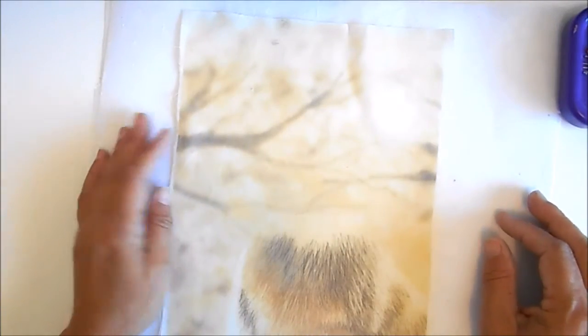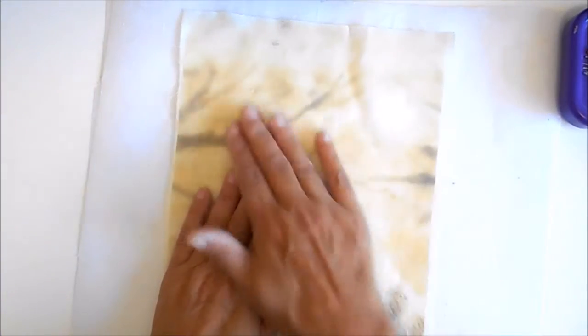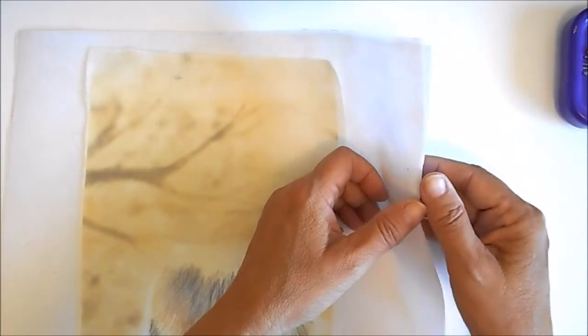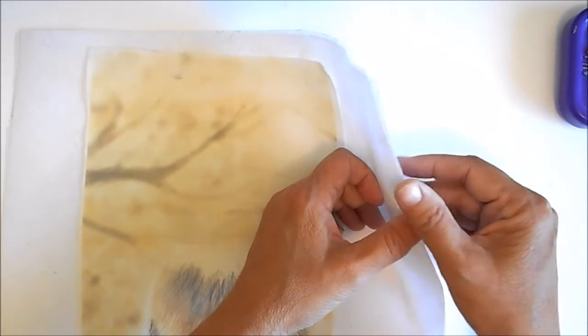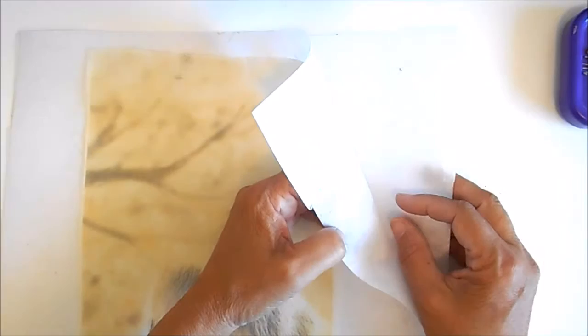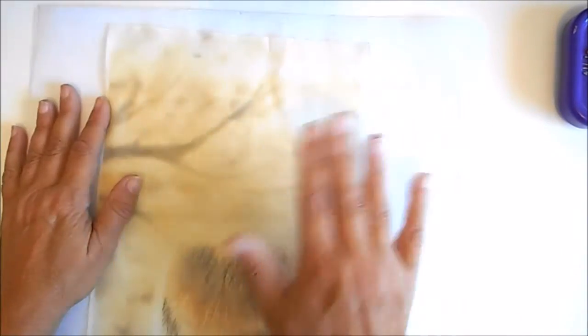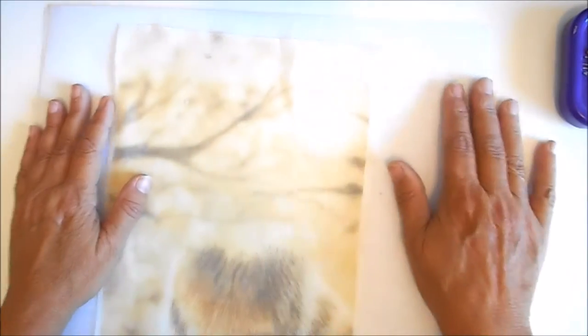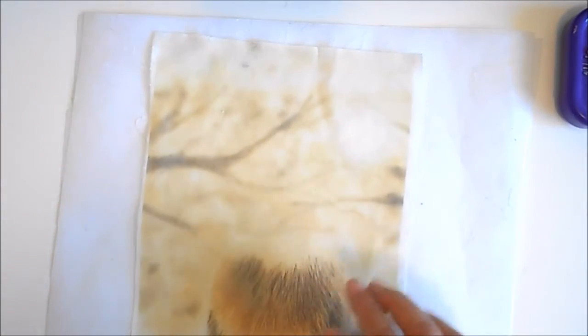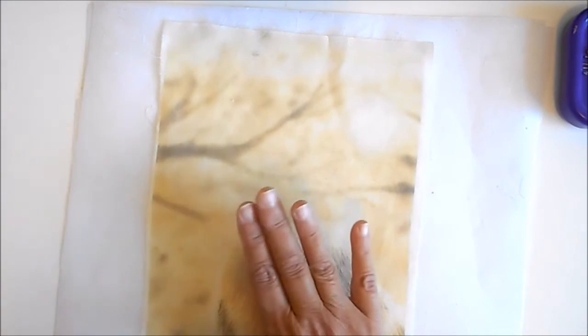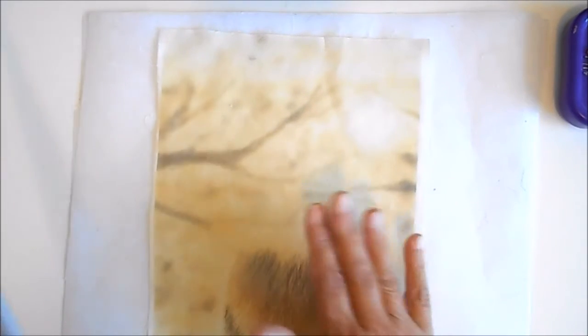When you go to sew the design on the printed background fabric, you'll want to use either a heavyweight tearaway stabilizer, or I'm using two pieces of a medium weight tearaway stabilizer since I didn't have the heavyweight stabilizer. And an eight and a half inch by eleven inch piece of fabric really isn't going to fit in my hoop that well because I don't have a five by seven hoop.